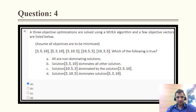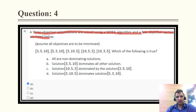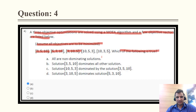Question 4: a three-objective optimization problem is solved using a MOEA algorithm, and a few objective vectors are listed — (3,5,10), (5,3,10), and (3,5,10) and another variant. Assume all objectives are to be minimized. Which of the following is true?